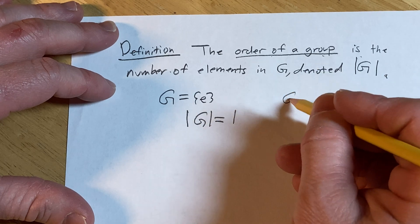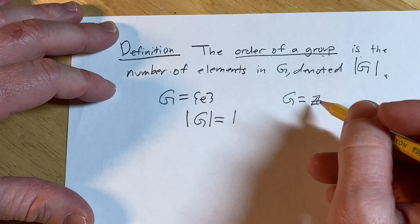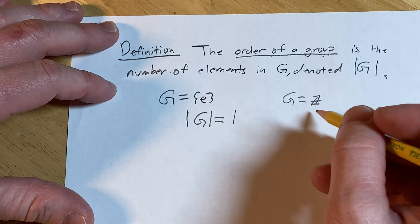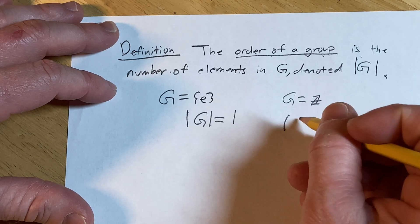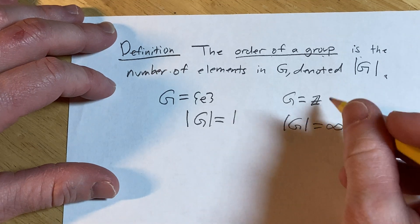If, on the other hand, let's say G is equal to the set of integers, and you're looking at that as a group under addition, in this case, the order of G is infinity, because this is an infinite group.